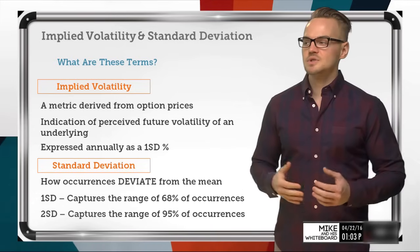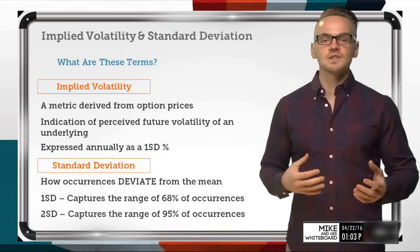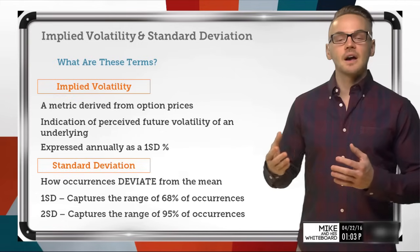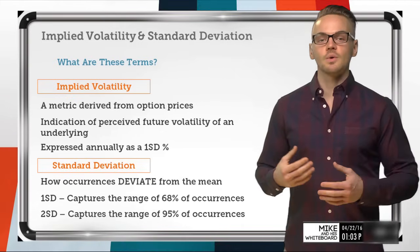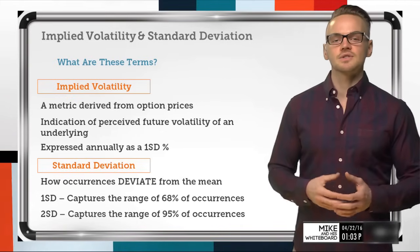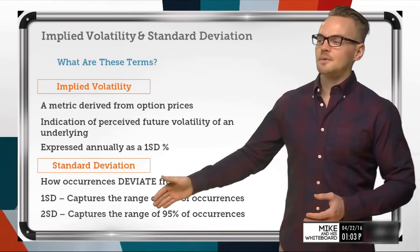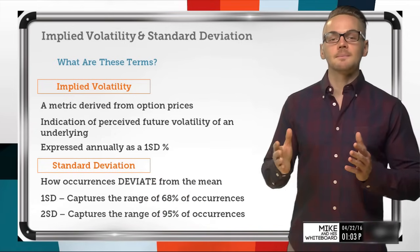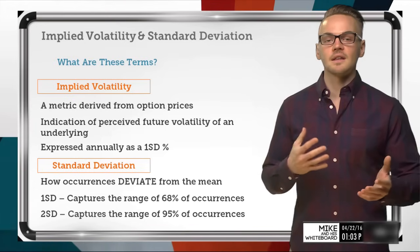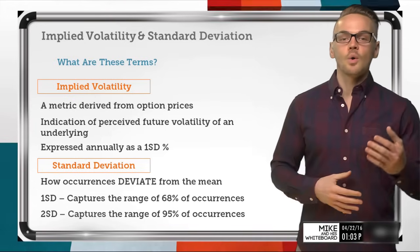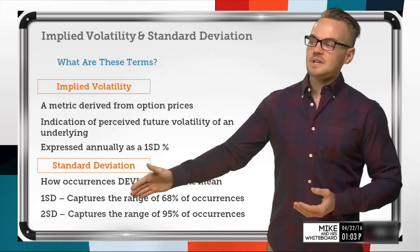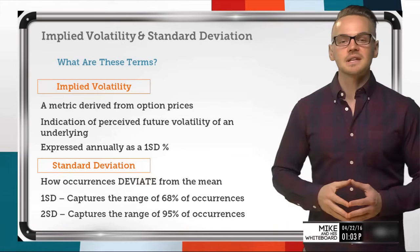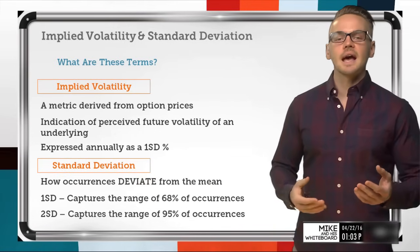Usually when we look at two standard deviation levels, it's an indication of perceived max loss. For example, when a brokerage is looking at calculating a buying power reduction or margin on a certain position, they might calculate it from two standard deviations depending on a person's account profile. These are the two most common values you'll see when looking at options trading.